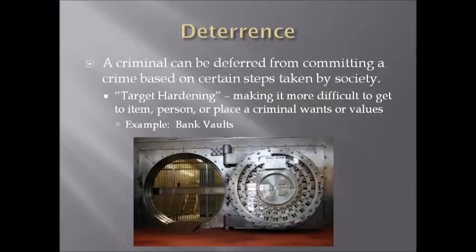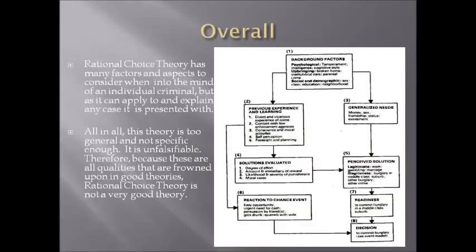Overall, Rational Choice Theory has many factors to consider when looking into the mind of an individual criminal, but it can apply to and so-called explain any case it's presented with — it's not specific at all, it's too general. It's unfalsifiable and doesn't explain what is needed to show or falsify the theory. Rational Choice Theory mainly describes; it doesn't really explain why criminals' brains process information that way, or why we even believe that choice is rational.